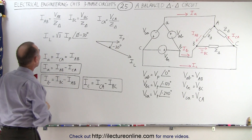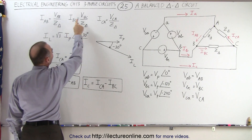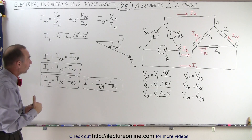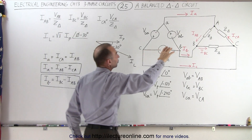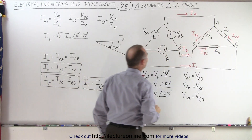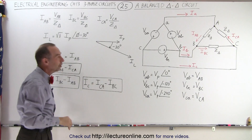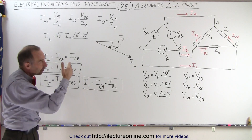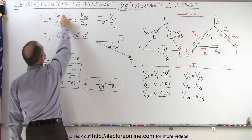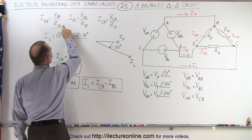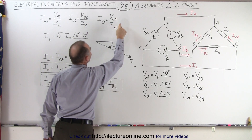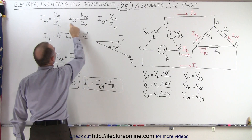We also find the phase currents IAB, IBC, and ICA in the very same way as we did with a Y-delta circuit. It is the voltage across each of the three legs or branches of the delta circuit divided by the impedance of the load. The impedance of the load has to be the same across all three branches because it's a balanced load. So we take VAB divided by the impedance, VBC divided by the impedance, and VCA divided by the impedance to find the three phase currents.